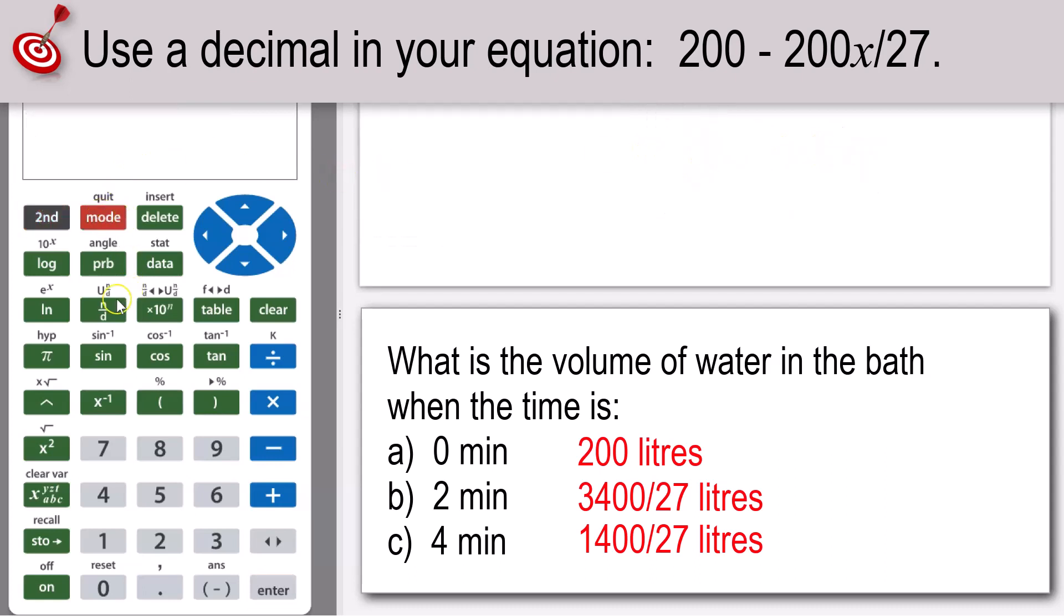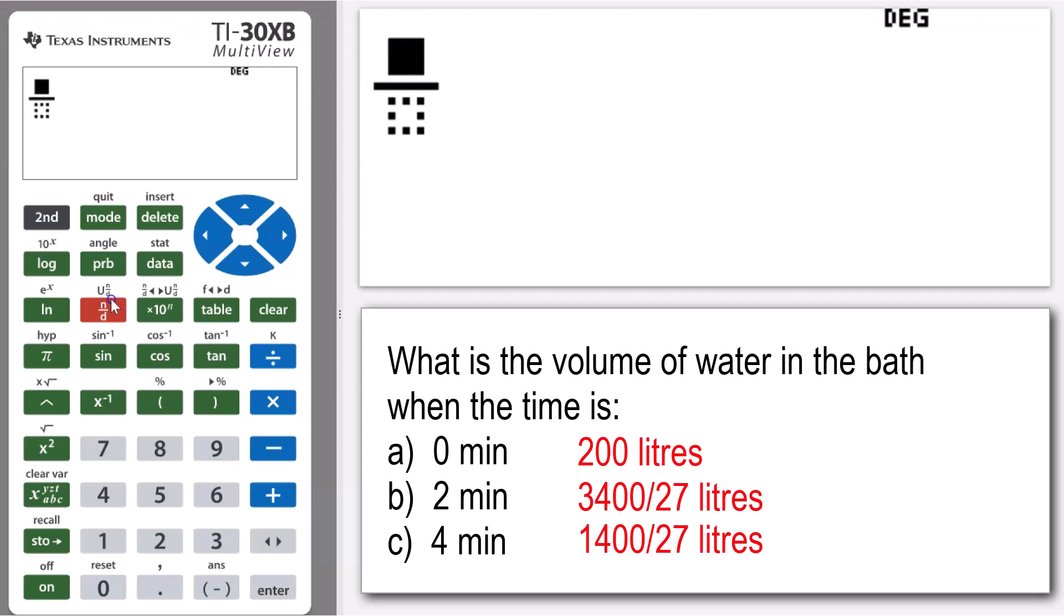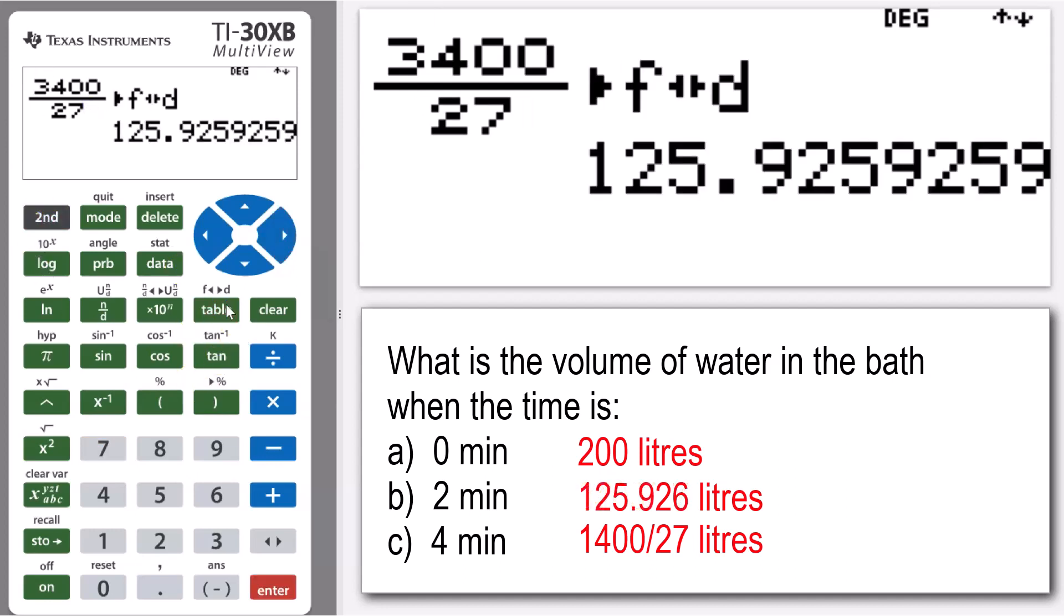Put that in as a fraction, so it was 3400 over 27. Make sure you're out of the fraction to do this, and then pressing second and then the table button again just to convert that into a decimal. So we can see at time two minutes there was, say to two decimal places, 125.93 liters are still remaining in the bath.